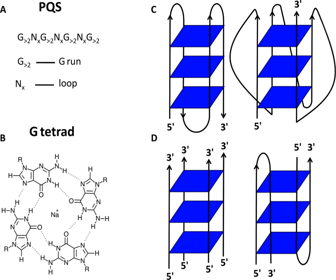G-quadruplexes, also known as G4 DNA, are secondary structures found in nucleic acids that are rich in guanine. These structures are normally located at the ends of the chromosomes known as the telomeric regions. The G-quadruplex can either be parallel or antiparallel depending on the loop configuration, which is a component of the structure.